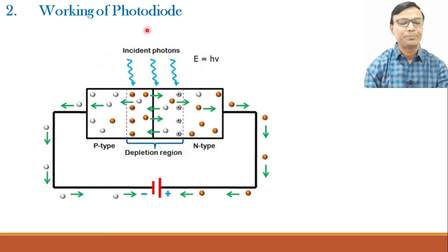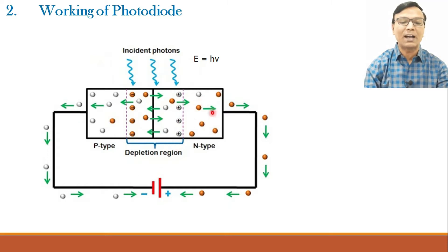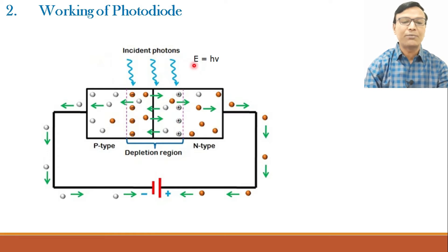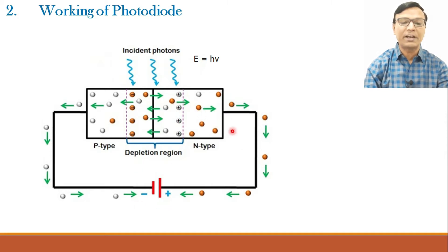We operate the photodiode in the reverse bias condition. When we reverse bias a diode, the depletion region becomes wide, because the holes present on the p-side are attracted towards the negative terminal of the battery, and the electrons — majority carriers in the n-type material — are attracted towards the positive terminal. On this depletion layer, we incident photons, making light fall on it, and when the energy of the incident photon E = hν is greater than the band gap energy of the semiconductor, an electron-hole pair is generated and current flows in the reverse bias condition.